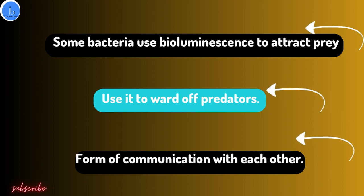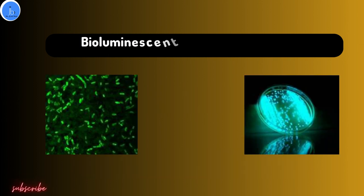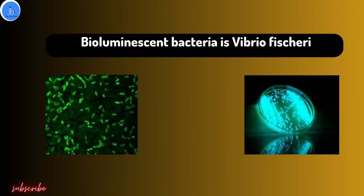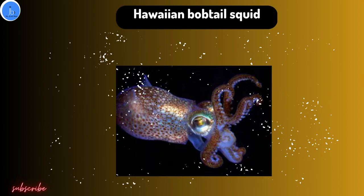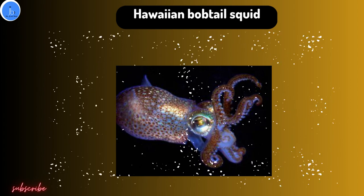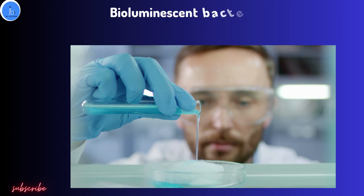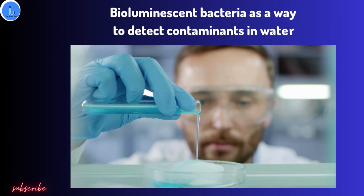One such example of bioluminescent bacteria is Vibrio fischeri. This type of bacteria is found in the light organs of certain marine animals, such as the Hawaiian bobtail squid. The bacteria provides the squid with its characteristic bioluminescence, which helps it avoid predators.